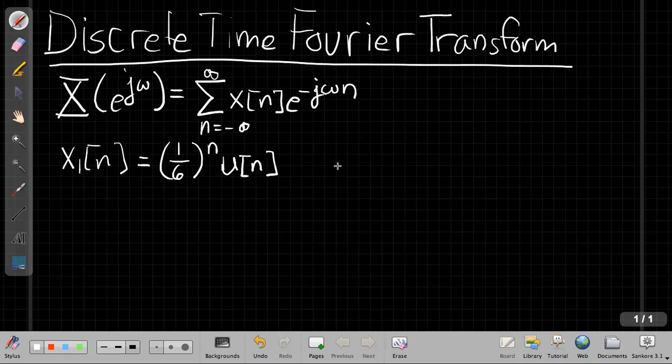Never a bad thing to make a quick sketch of what the signal looks like to remind ourselves. Because of this u of n, this signal will be zero for all negative time, because whenever n is negative, this term will be zero. And then at n equals zero, it will be one, it will be height one.